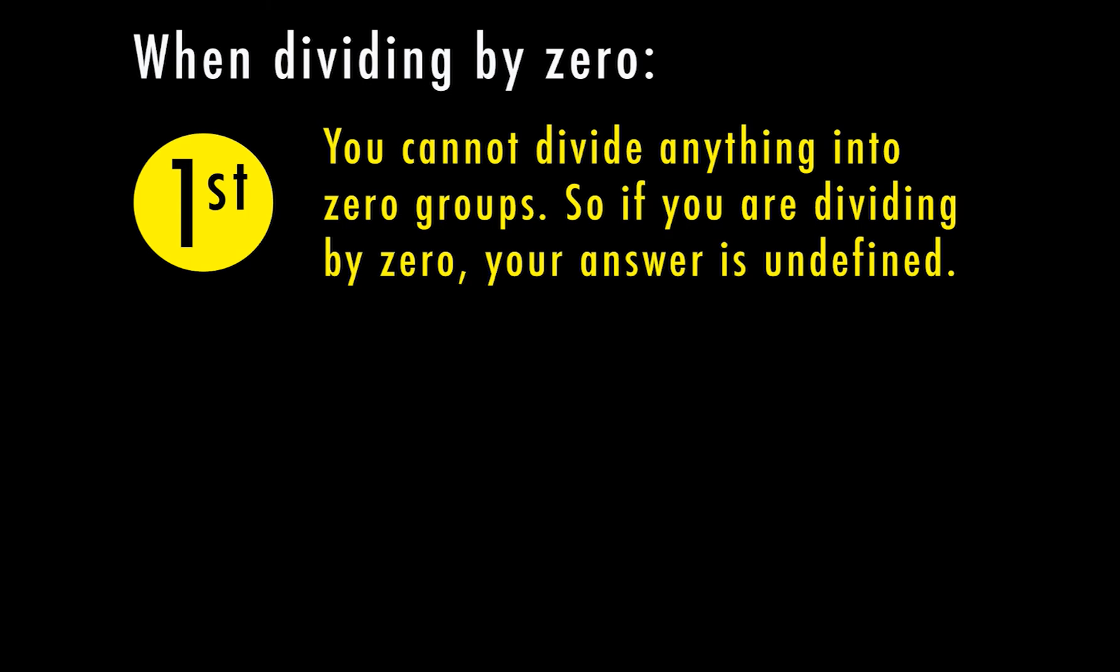Anytime you have a problem where you're dividing by zero, which means zero is either in the denominator of a fraction or it's the second number when you're dividing, you cannot actually divide anything into zero groups. So if you're dividing by zero, your answer is going to be undefined.